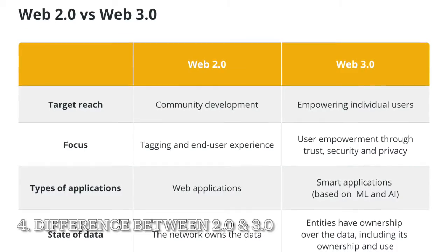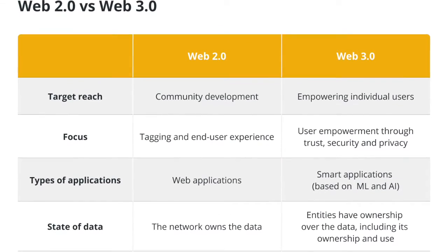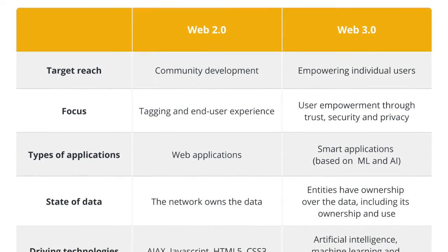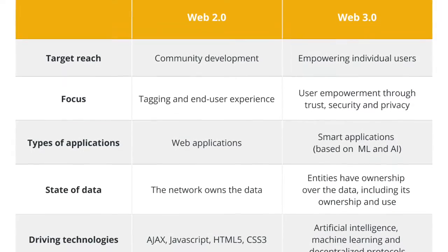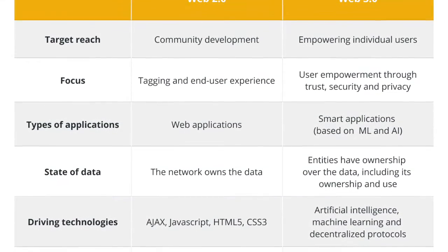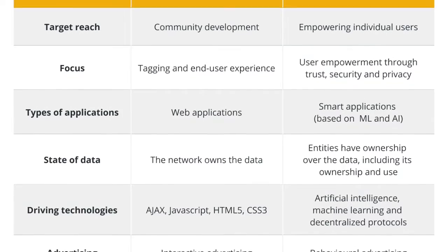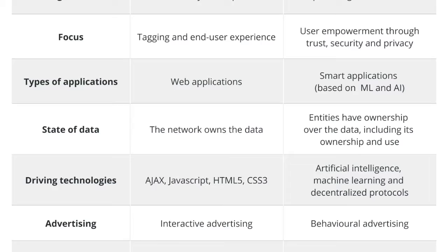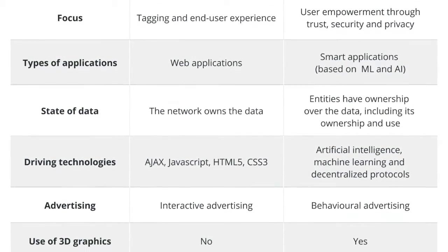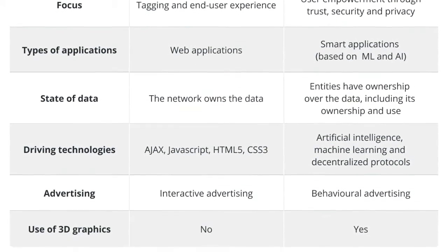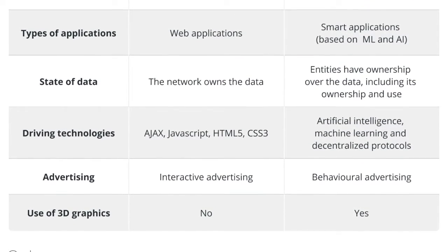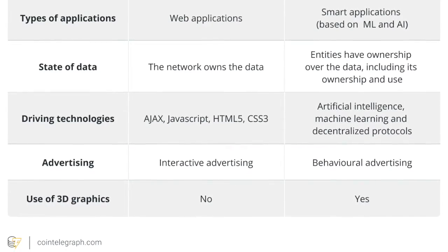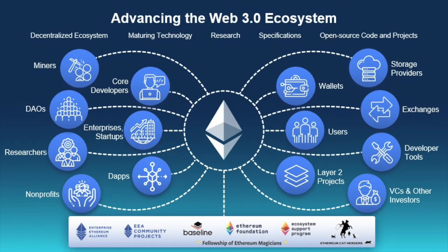Now let's talk about the difference between Web 2.0 versus Web 3.0. Looking at this comparison, you can see the difference in target reach — Web 2.0 focused on community development, while Web 3.0 means empowering individual users. Web 2.0 focuses on tagging and end-user experience, while Web 3.0 focuses on user empowerment through trust, security, and privacy. Web 2.0 uses web applications versus Web 3.0's smart applications, and in Web 2.0 the network owns the data, while in Web 3.0 entities have ownership over their own data.